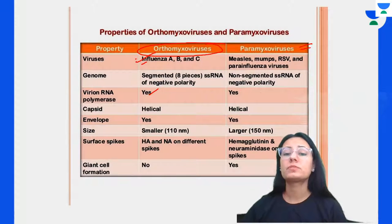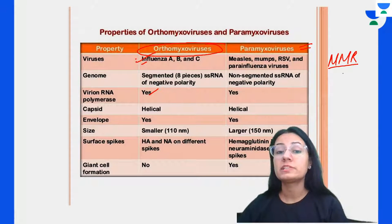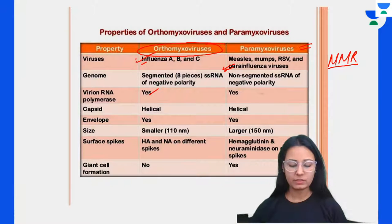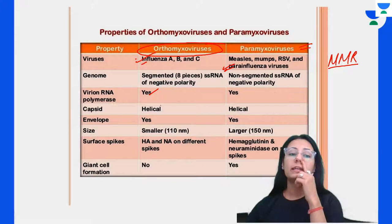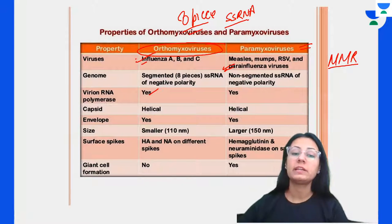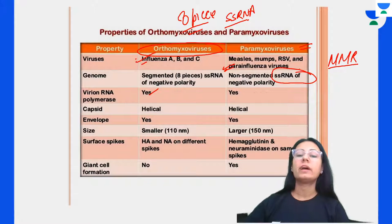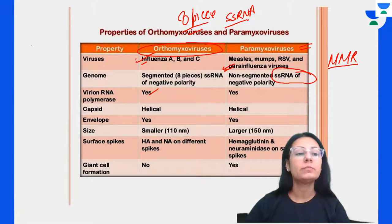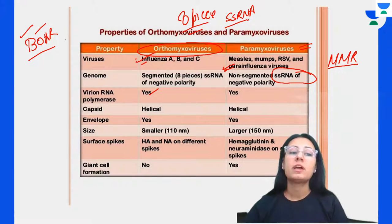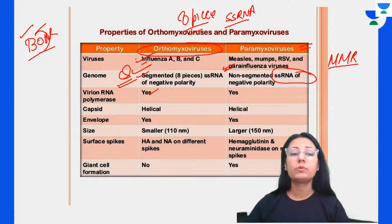Regarding the genome: orthomyxovirus has segmented eight pieces — single-stranded RNA of negative polarity — whereas paramyxovirus is non-segmented. For segmented viruses, remember the mnemonic: B for bunyavirus, O for orthomyxovirus — both are segmented. Both orthomyxovirus and paramyxovirus have RNA polymerase with helical capsid and envelope.